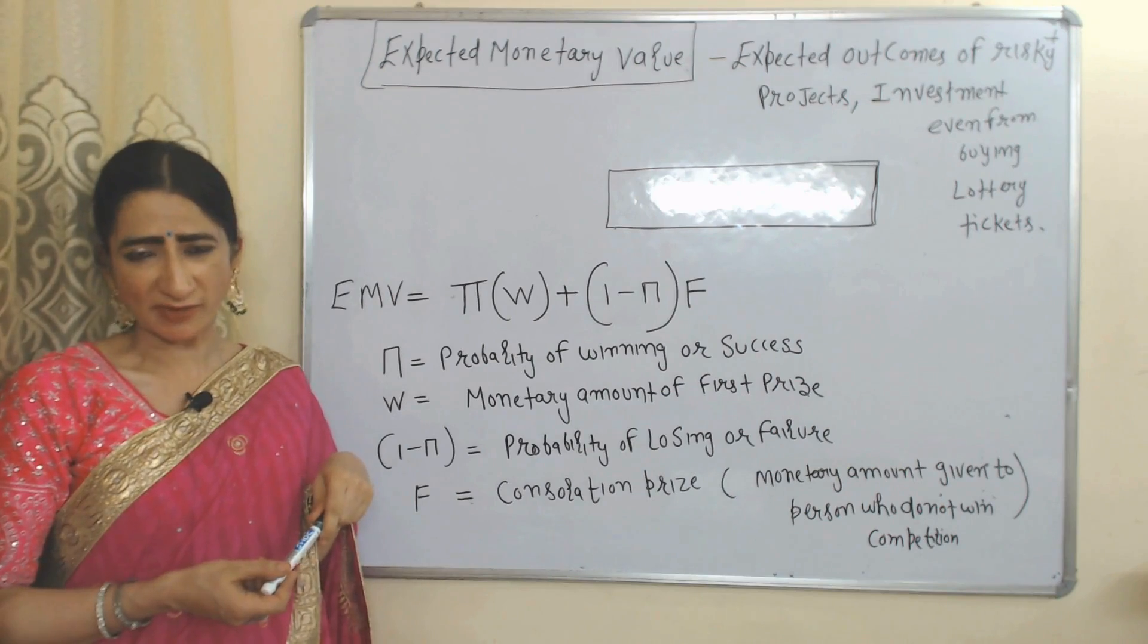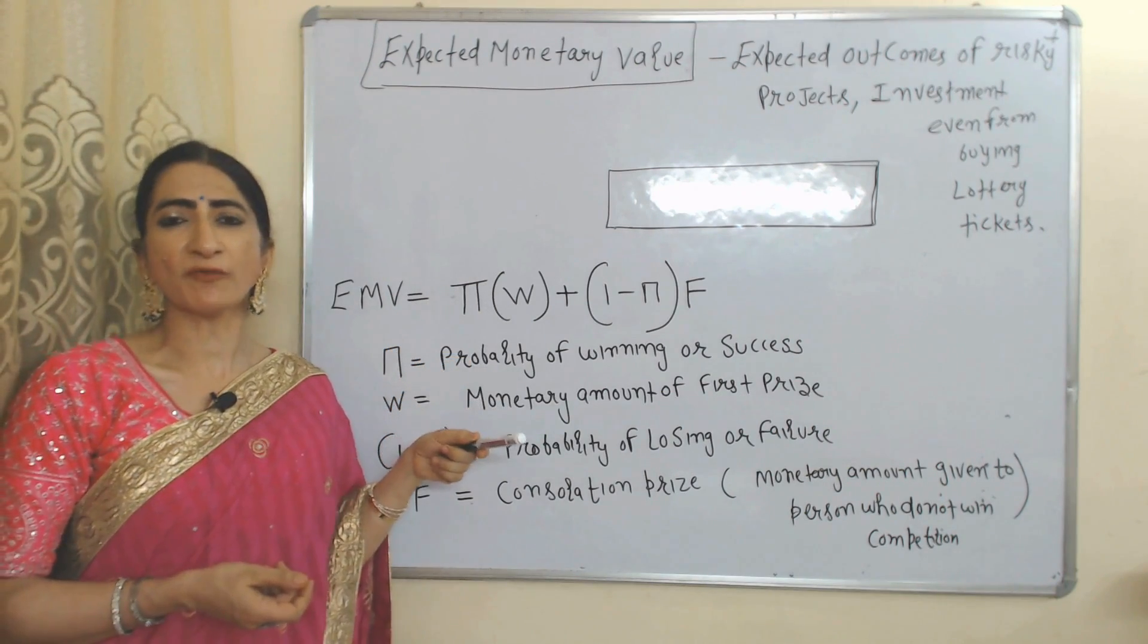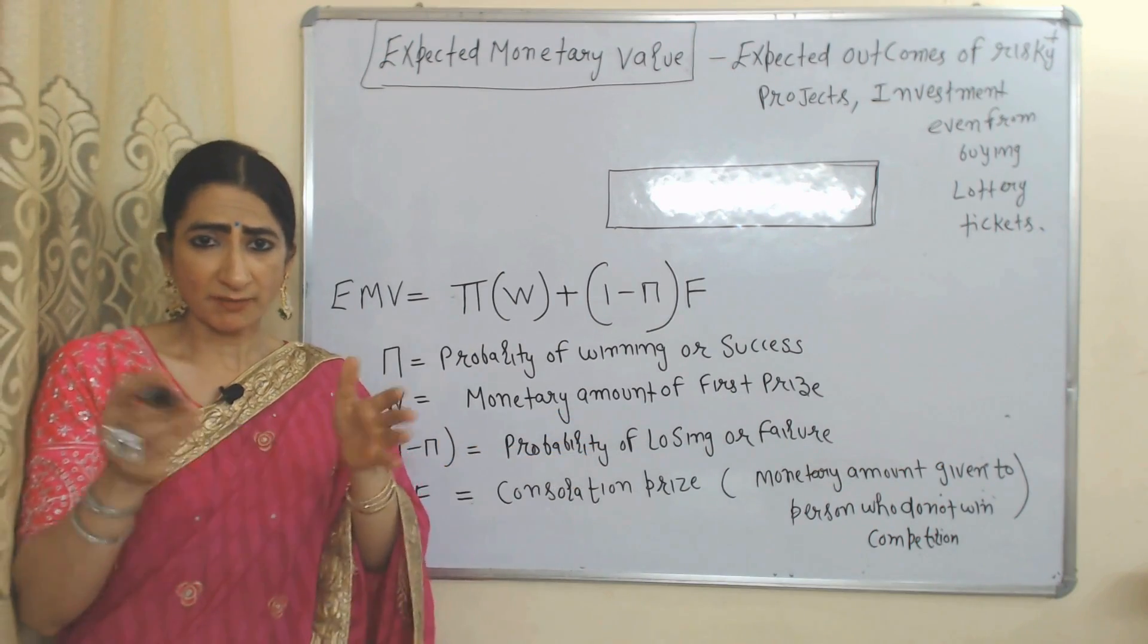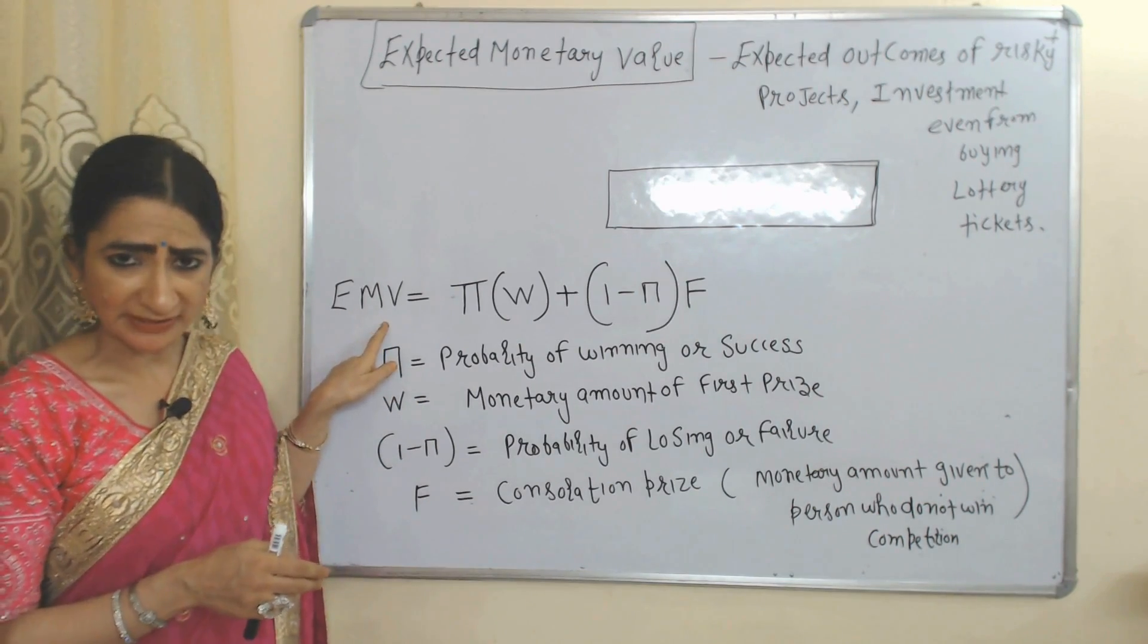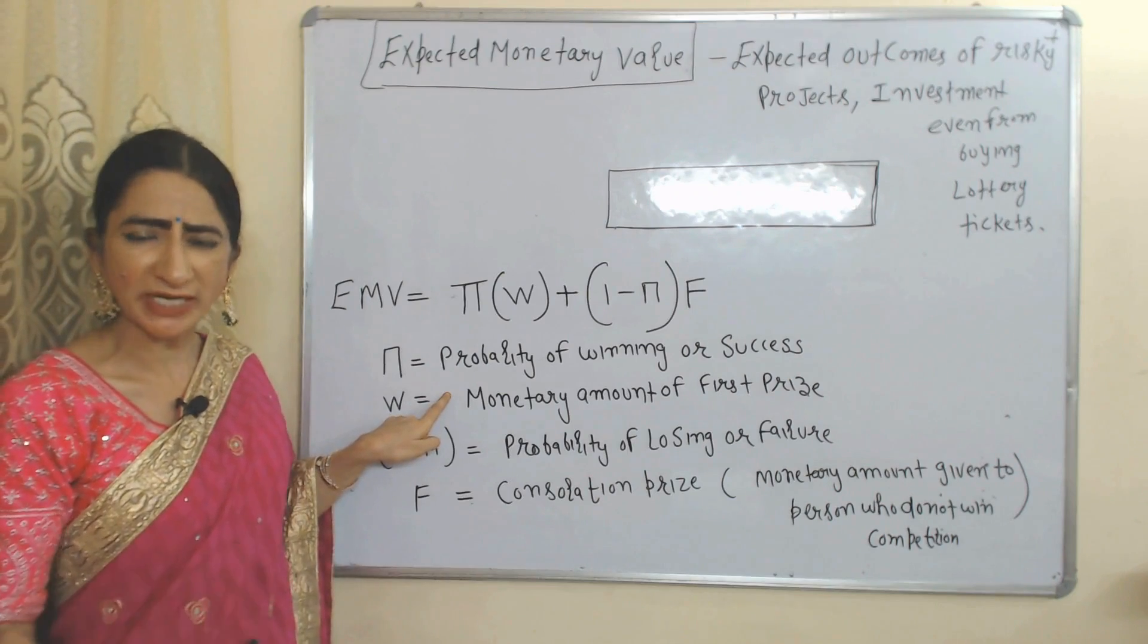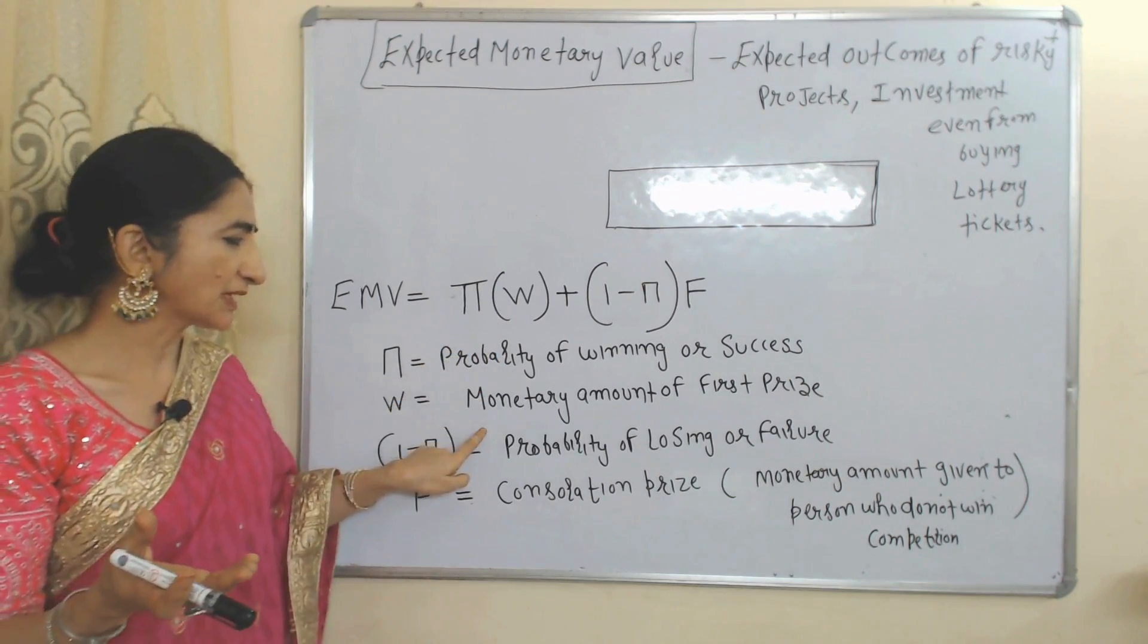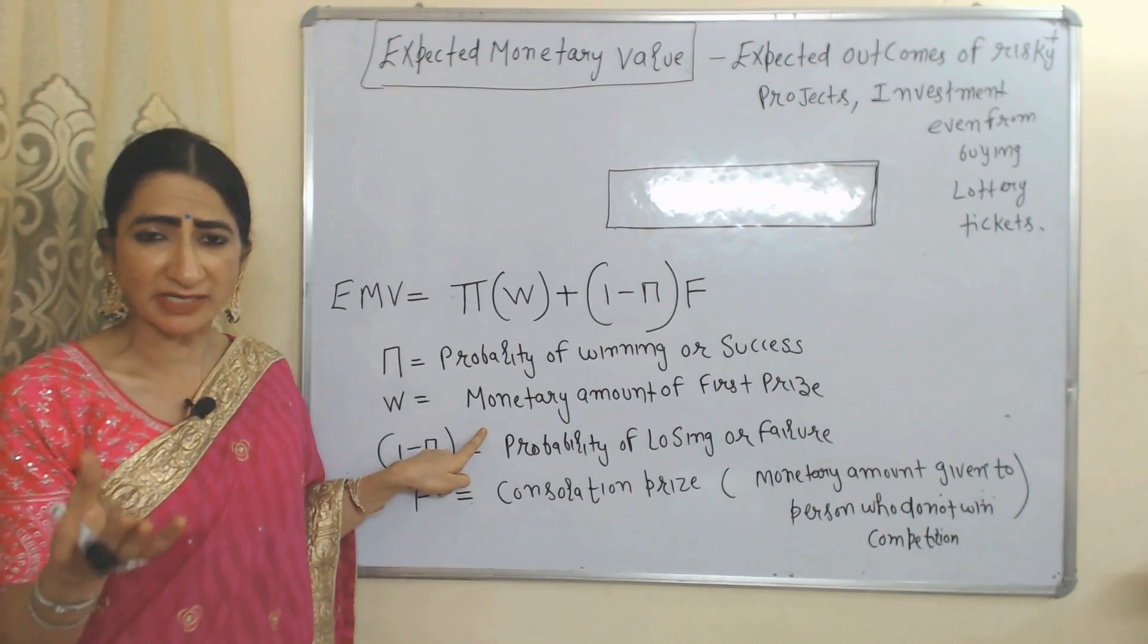Now we will see the formula for calculating expected monetary value according to NM utility index. What do you mean by expected monetary value? Expected monetary value means expected outcome of a risky project, risky investment, or even buying lottery tickets. Here, EMV represents expected monetary value, pi represents probability of winning or probability of success, W represents monetary amount of first prize or the money you receive when you win.